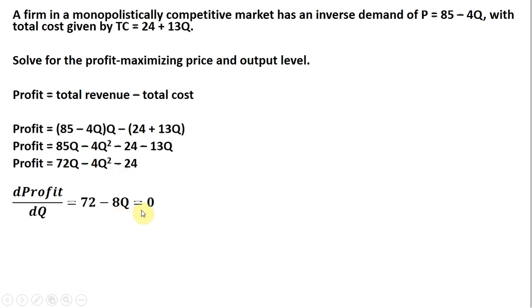We're maximizing, so we set this derivative equal to 0 and solve for Q. So 8Q equals 72, Q equals 9.